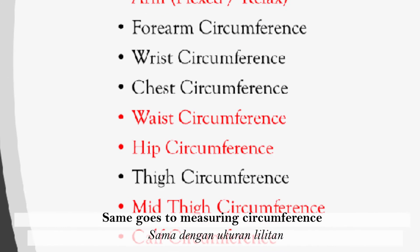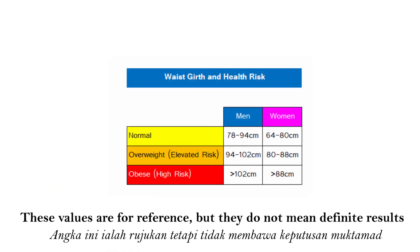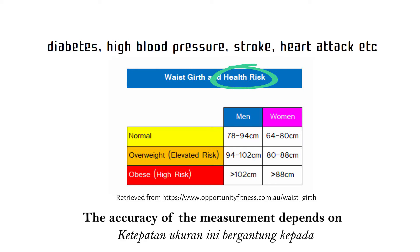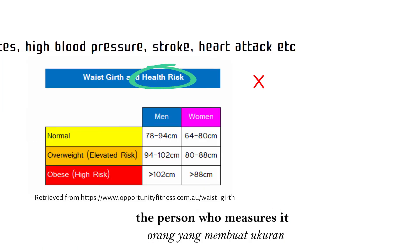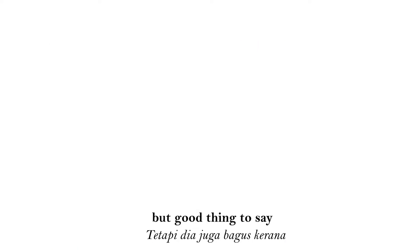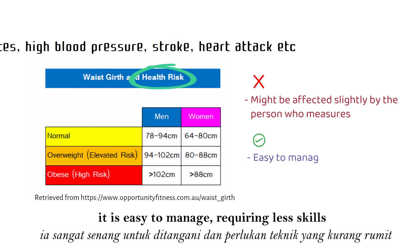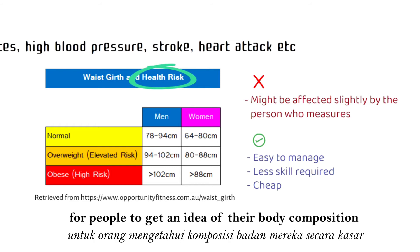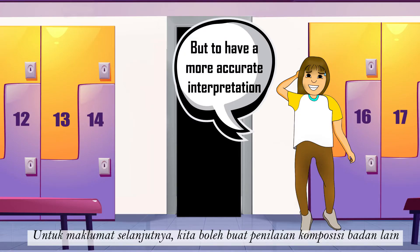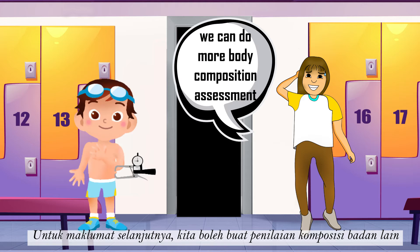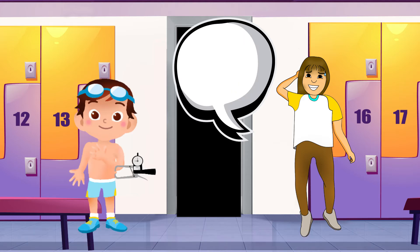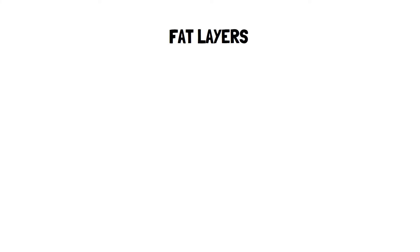The same goes for measuring circumference. These values are for references, but they do not mean definite results. The accuracy of the measurement depends on the person who measures it, but it is easy to manage, requiring less skill. It is also a cheap method for people to get an idea of their body composition. For a more accurate interpretation, we can do more body composition assessment like measuring our skin fold.